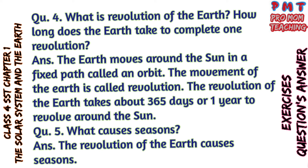Question 4: What is revolution of the Earth? How long does the Earth take to complete one revolution? Answer: The Earth moves around the Sun in a fixed path called an orbit. This movement of the Earth is called revolution. The revolution of the Earth takes about 365 days, or one year, to revolve around the Sun. Question 5: What causes seasons? Answer: The revolution of the Earth causes seasons.